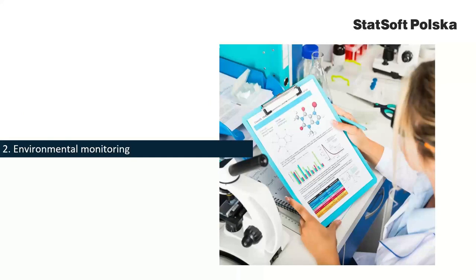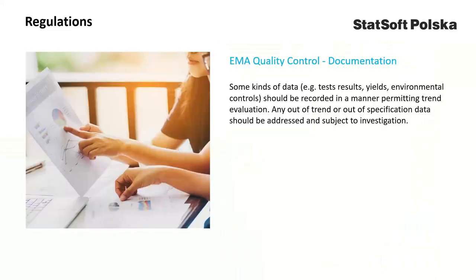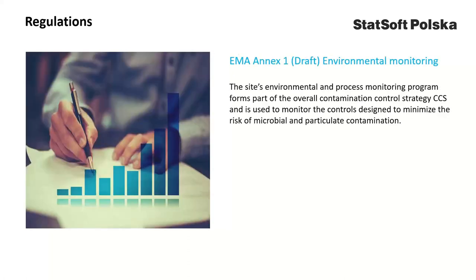Environmental monitoring procedures, methods, and examples. According to GMP requirements, some kinds of data including environmental controls should be recorded in a manner permitting trend evaluation. According to the draft version of Annex 1, the site's environmental process monitoring program forms part of the overall contamination control strategy and is used to monitor the controls designed to minimize the risk of microbial and particulate contamination.